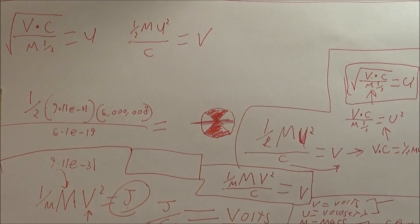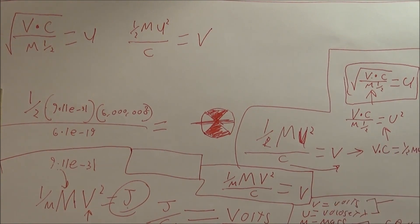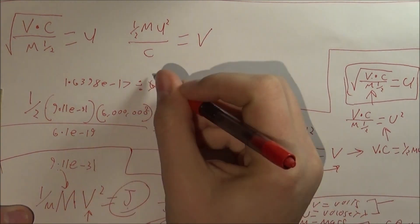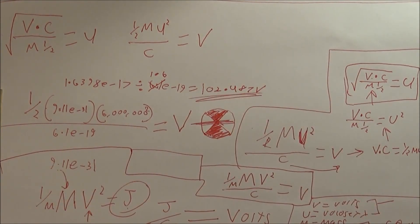All right, you guys can do this, but I'm going to solve it now. All right, so it was 102 volts at a velocity of 6 million meters a second.